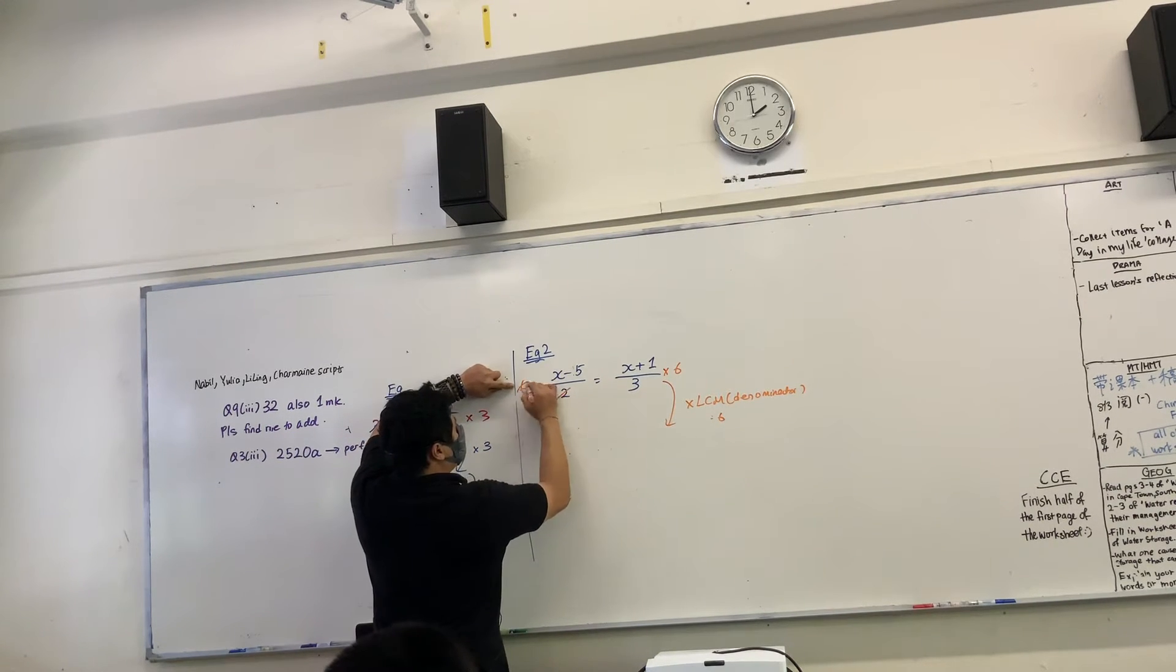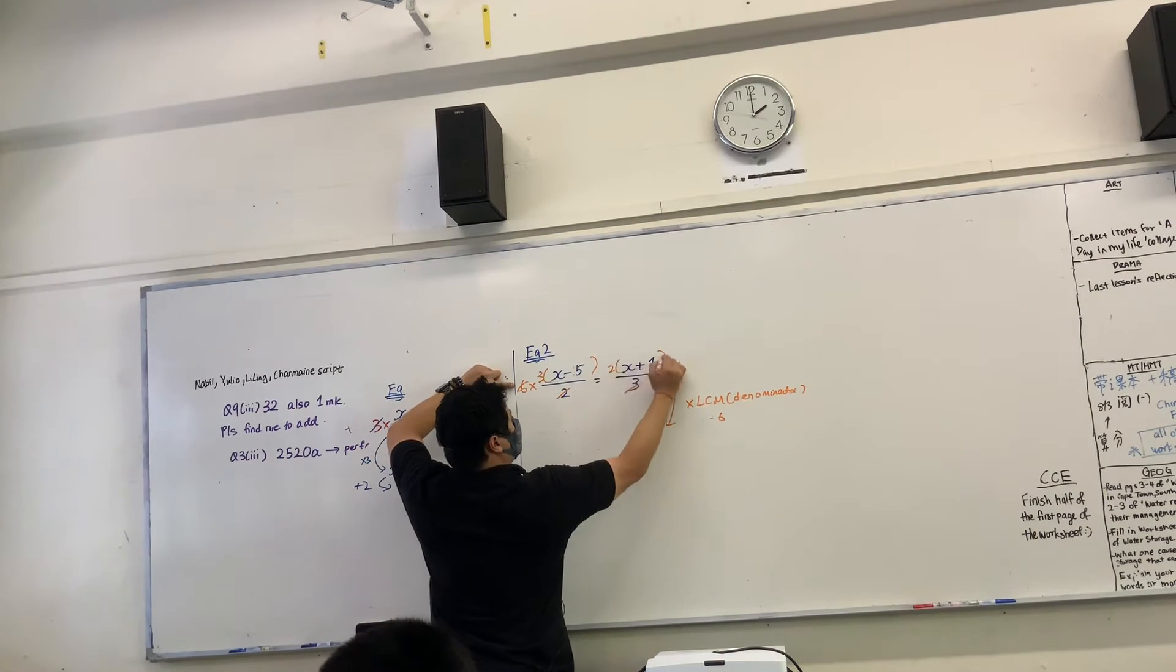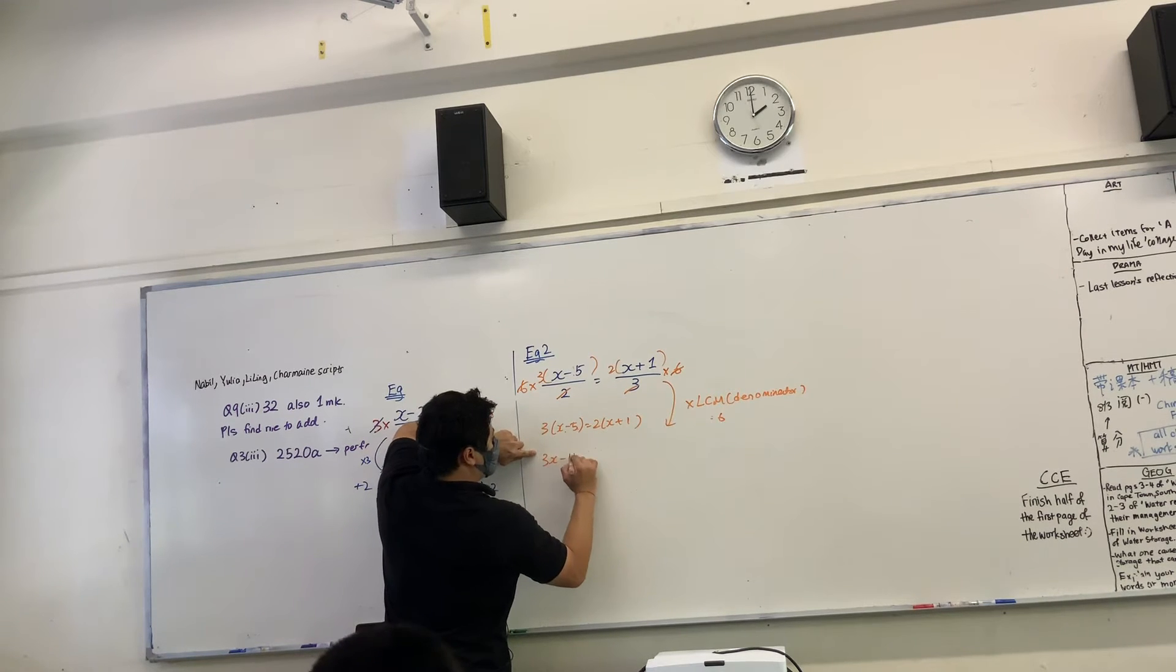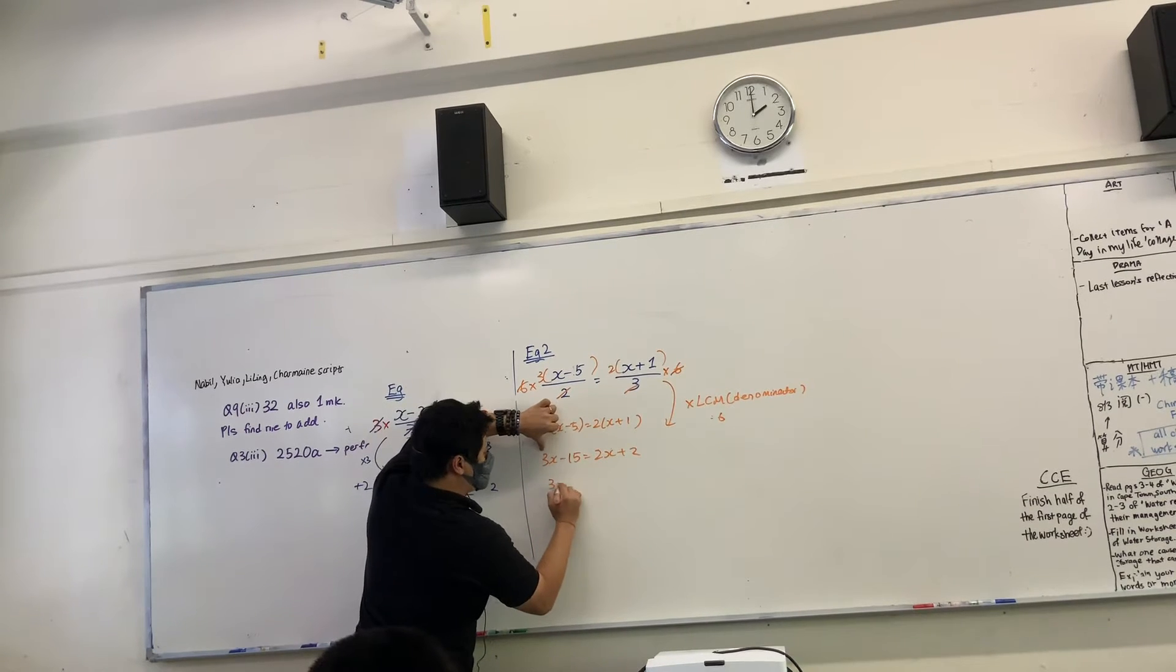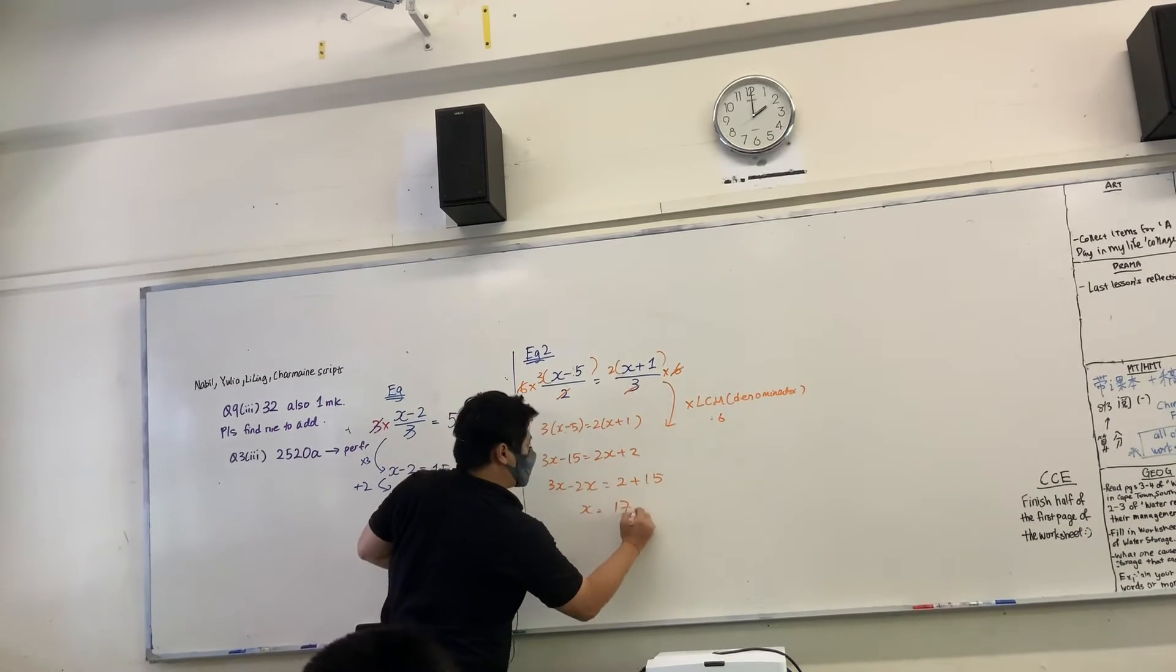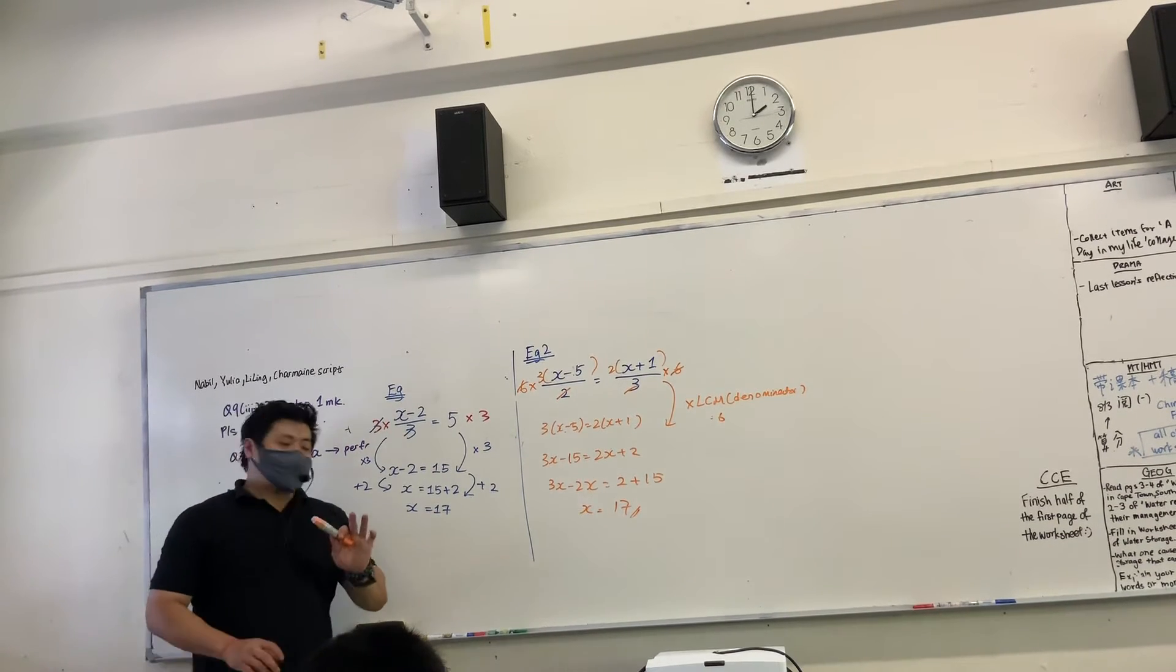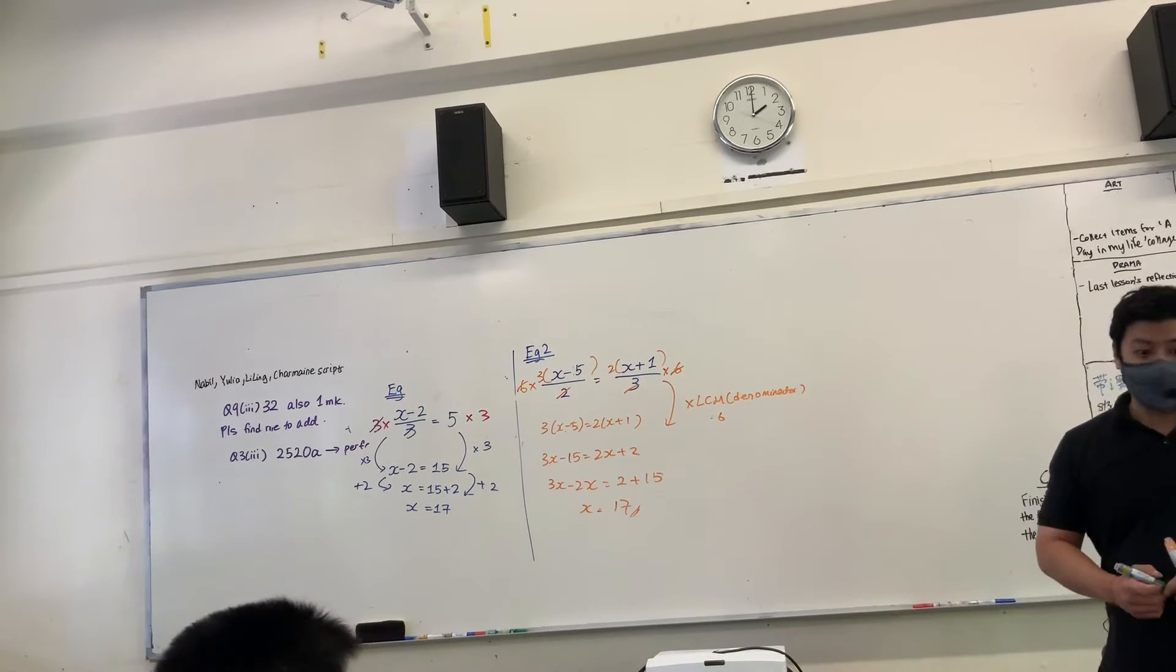6 divided by 2 will cancel with 3. 6 divided by 3 will cancel with 2. With that you have 3x minus 6 equals 2x plus 2. Is that okay? Now there is a shortcut for this. Who has heard of cross-multiply?